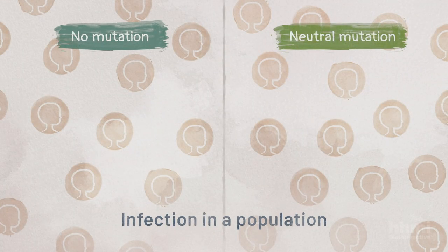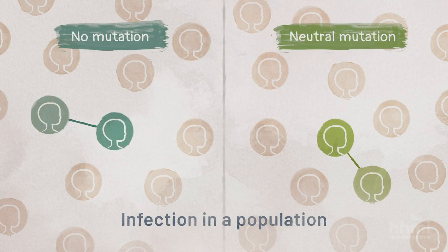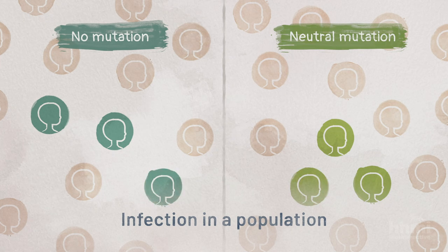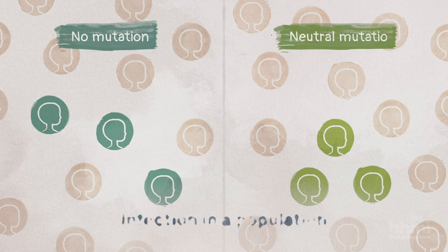Mutations that have no effect on the virus are called neutral mutations. Viruses with neutral mutations replicate just as well as viruses without these mutations.